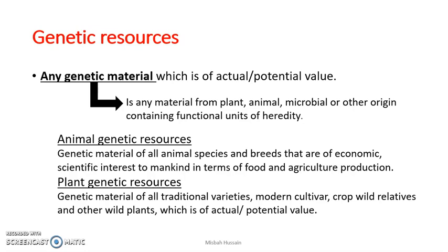Genetic resources can include animal genetic resources, plant genetic resources, microbial genetic resources, and aquatic genetic resources. The main focus is on the genetic material or genes that are of actual or potential value. Animal genetic resources include all breeds and species that humans can use for food or agricultural production. Plant genetic resources include all cultivars and varieties useful as food or for other purposes like wood for construction.